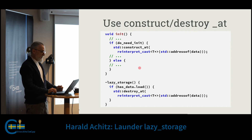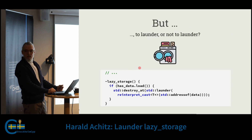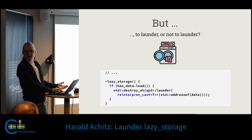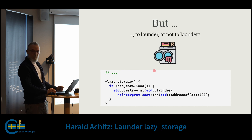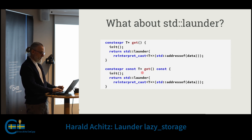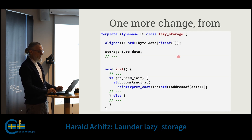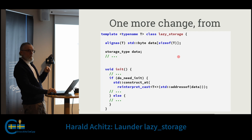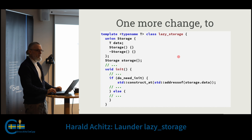So far I haven't changed anything regarding the launder question. Here, I clearly accessed something where I have taken the type away — so do I need to launder it or not? Before we come to the answer: here are the access functions with the launder, of course. Do I need it or not? Before answering, we do one more final change, because someone suggested: hey, you can use a union for the type.